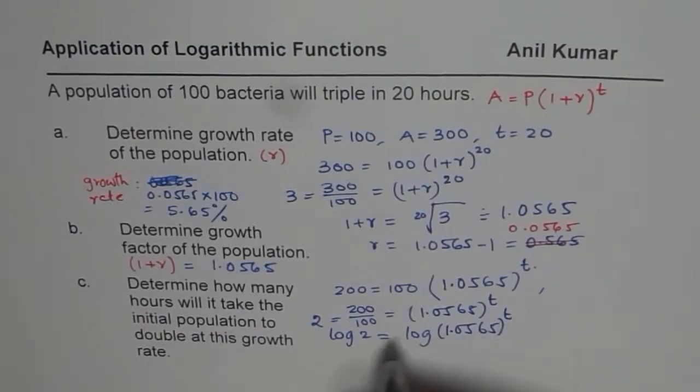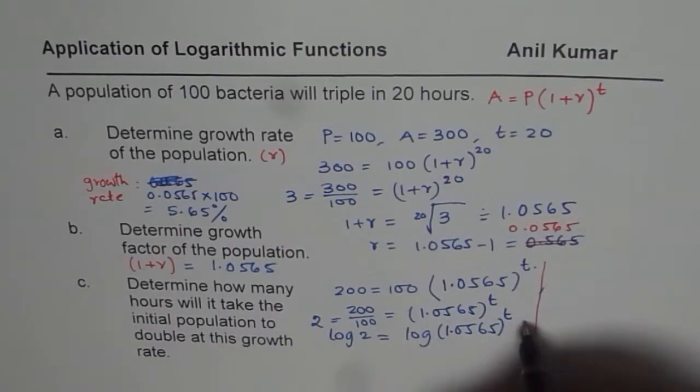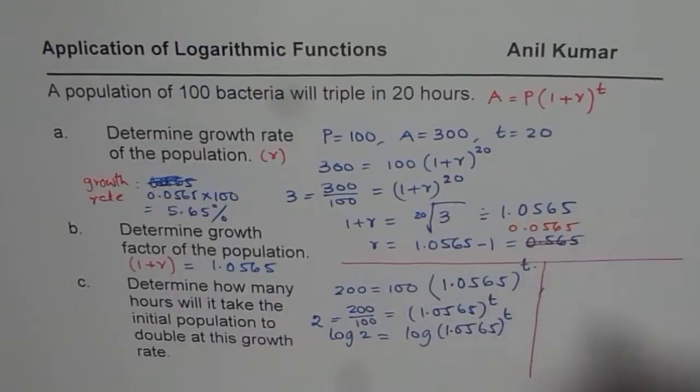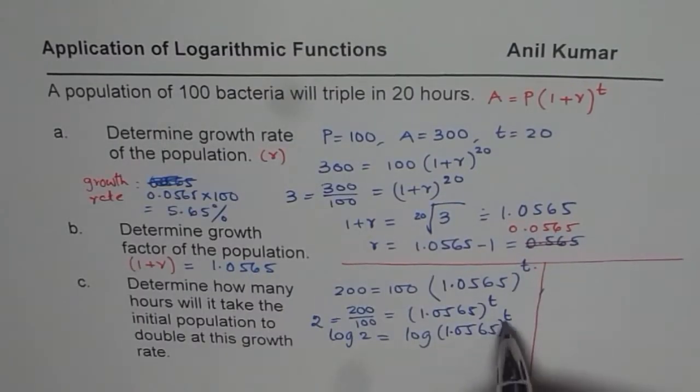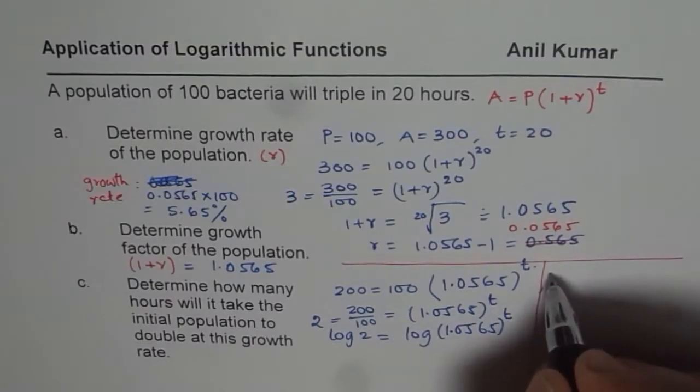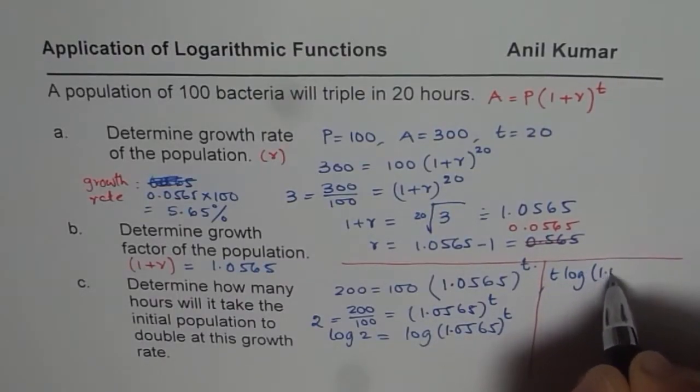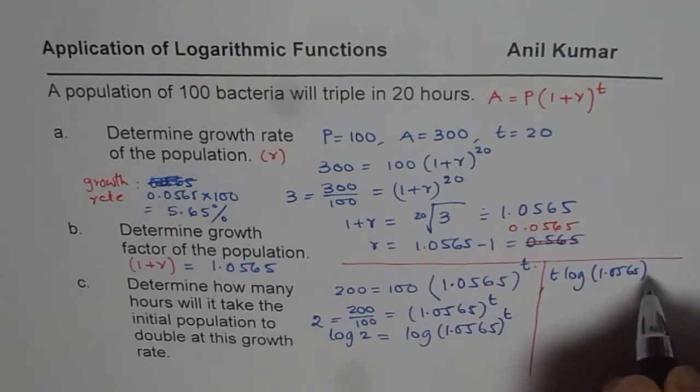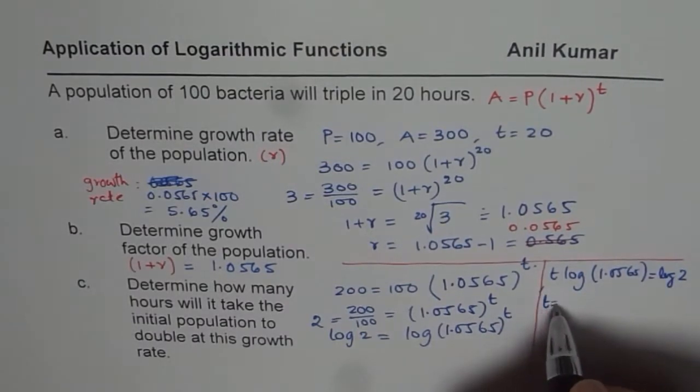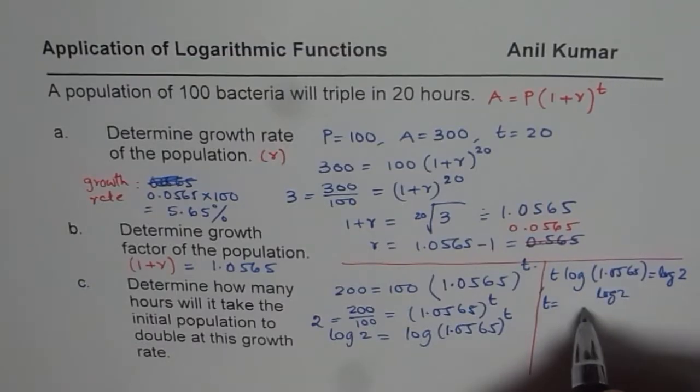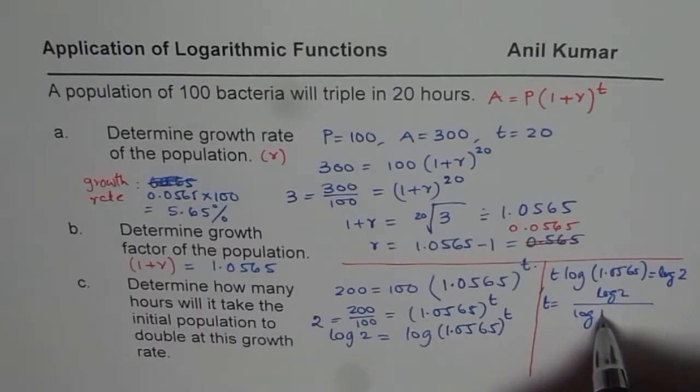So when you solve it, then t comes here, that's the properties of log. And so we get t times log of 1.0565 equals log of 2. So t could be written as log 2 divided by log of 1.0565.